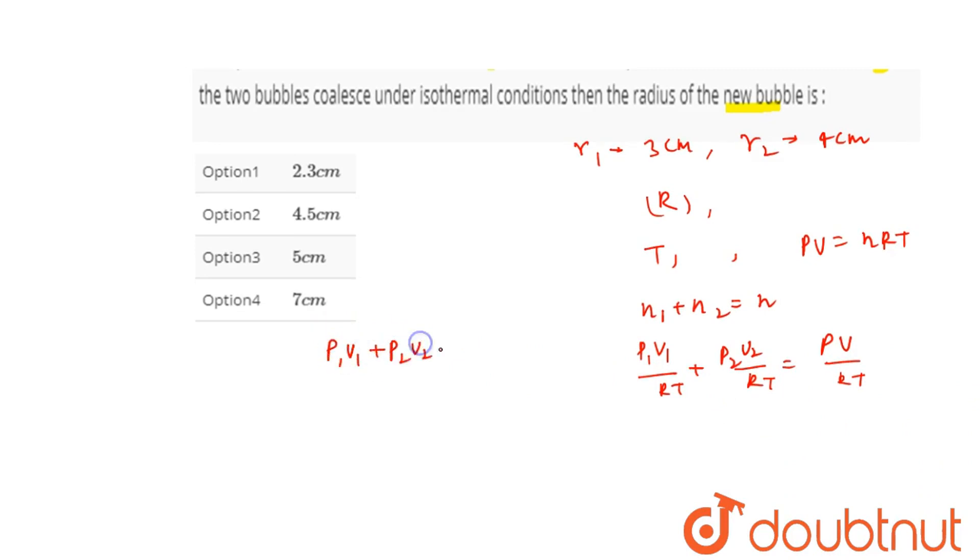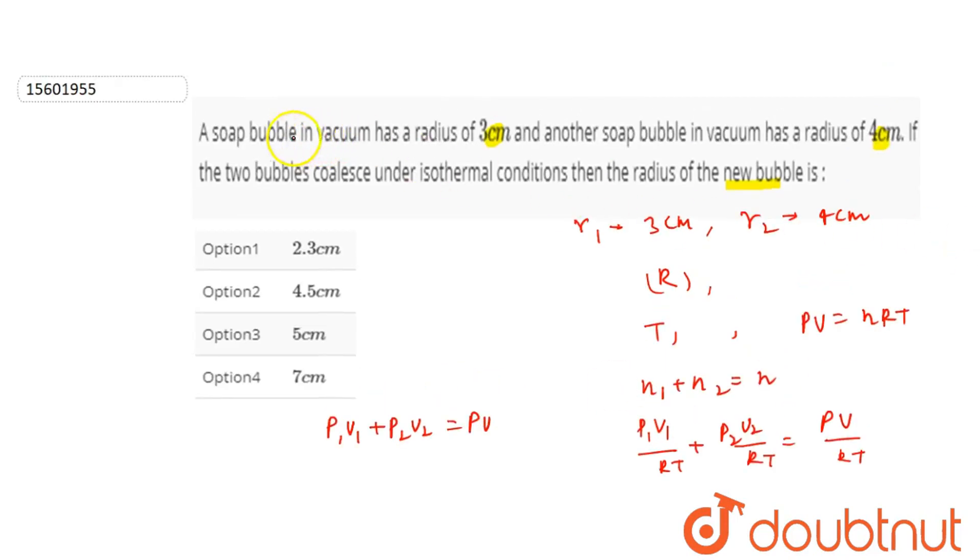P1V1 plus P2V2 is equals to PV. And this is in vacuum, so whatever our P excess is, that will be our P inside because the outside P excess pressure is P inside minus P0 equals P excess. P0 value is 0 because here there is vacuum, so P inside will be equals to 4T by R.